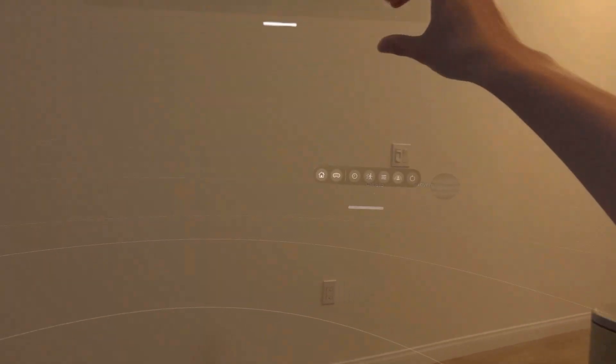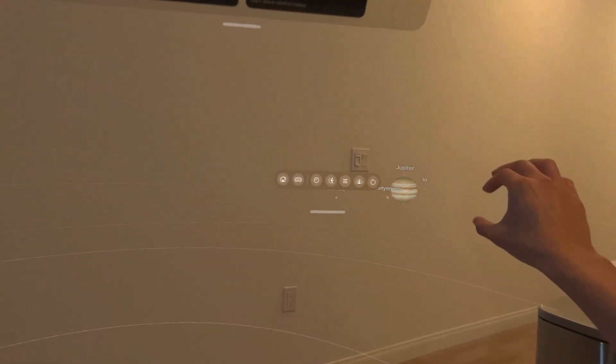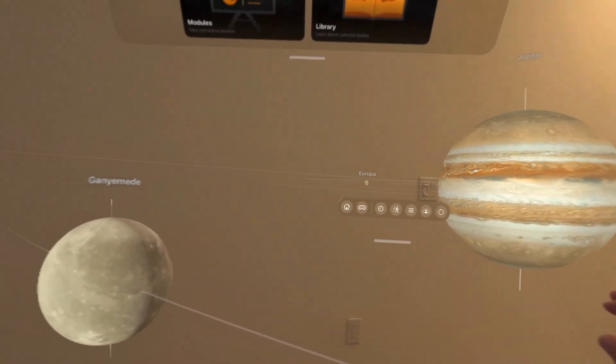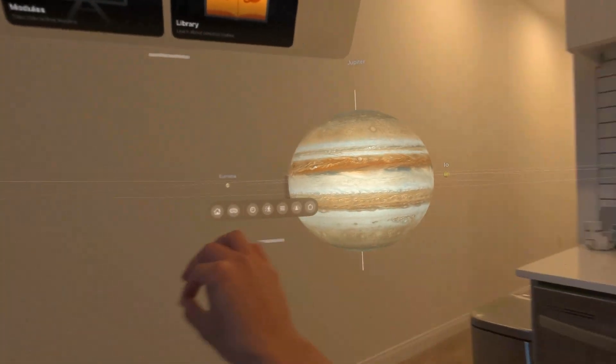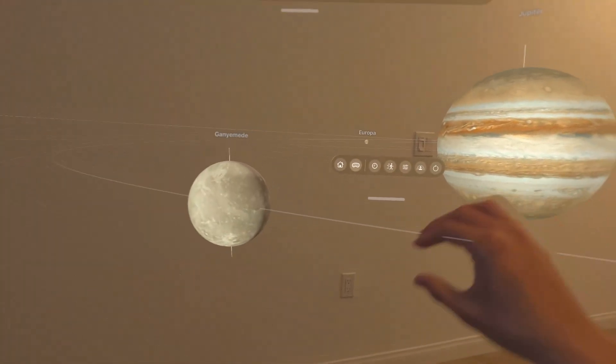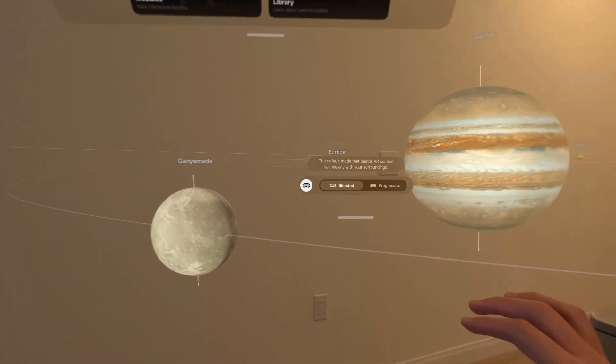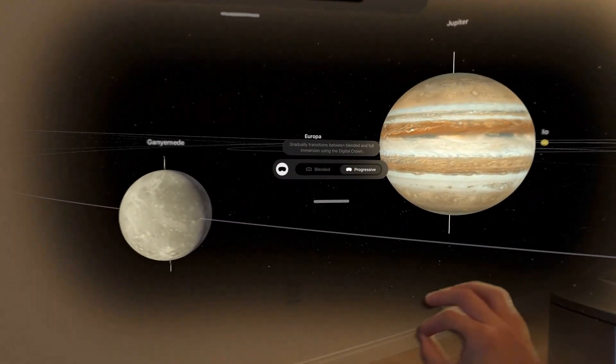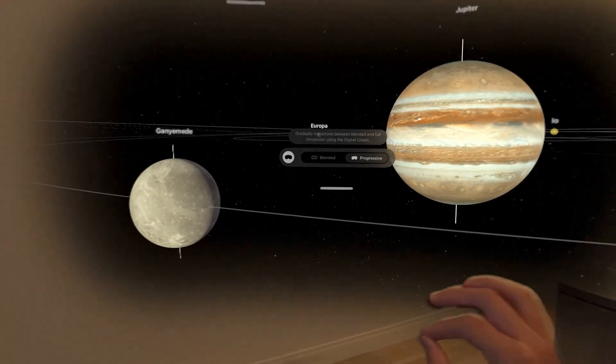Look at that. Oh, wow. You can see the different moons of Jupiter, Europa, Ganymede, Io. That's cool. What's this here? Oh, progressive. Nice. That looks cooler. I like that version better. Nice.